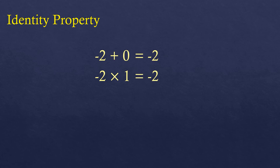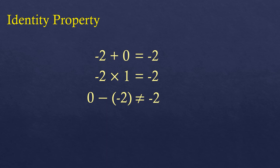Negative two times one is negative two. But it's not true for subtraction and division. Although negative two minus zero is negative two, the identity must also hold when you interchange the two numbers. For addition, negative two plus zero or zero plus negative two gives the same answer. For multiplication, interchanging negative two and one still gives negative two. But for subtraction, zero minus negative two gives positive two, so it does not give you an identity. Similarly for division — negative two divided by one is negative two, but one divided by negative two is negative one half, which is not equal to itself. So identity property is not applicable for subtraction and division.